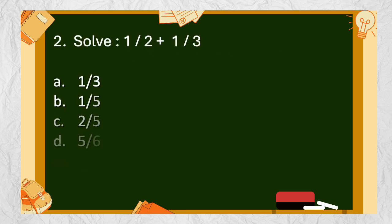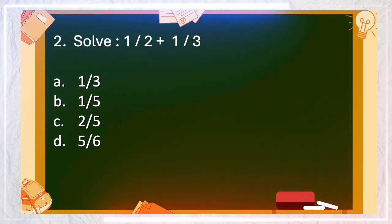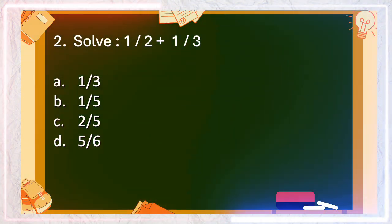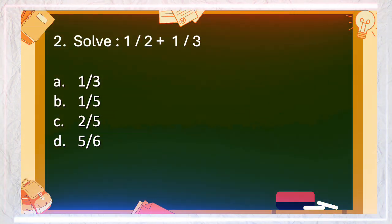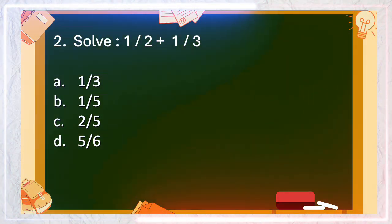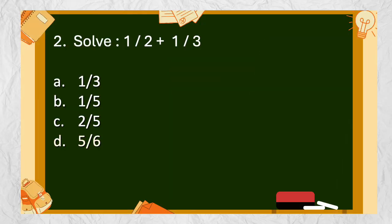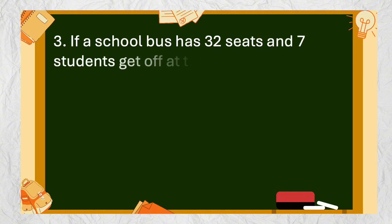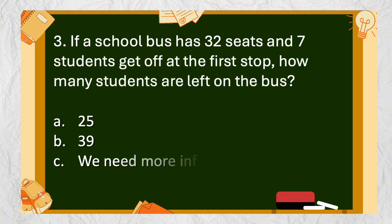Number 2: Solve 1 half plus 1 third. A. 1 third, B. 1 fifth, C. 2 fifths, D. 5 sixths. The answer is D. 5 sixths.